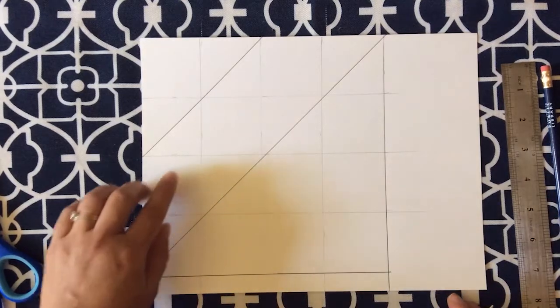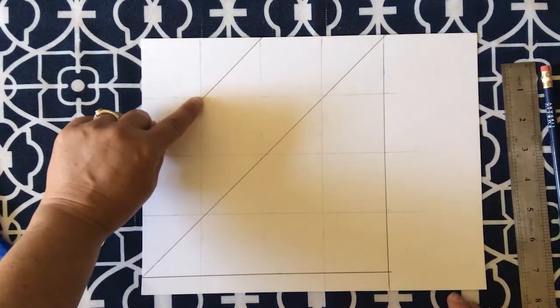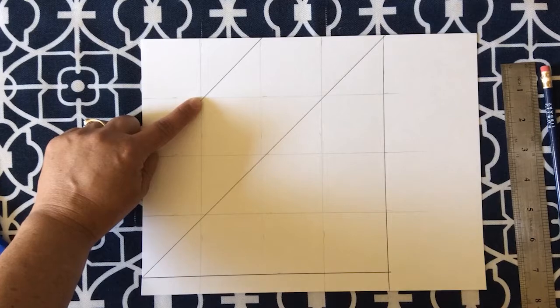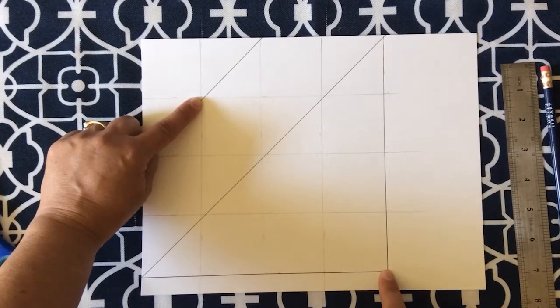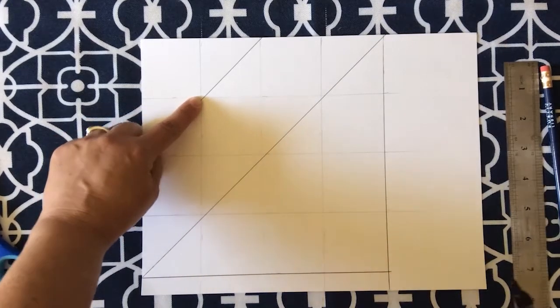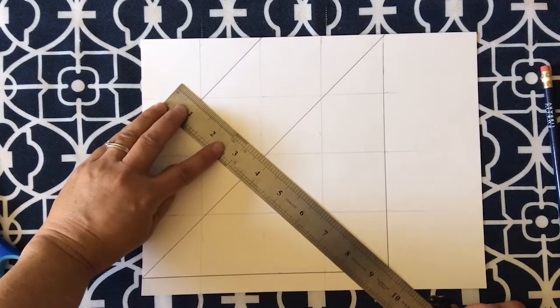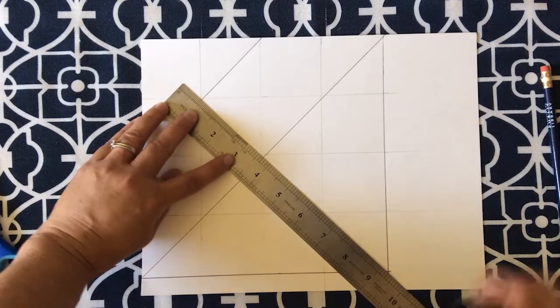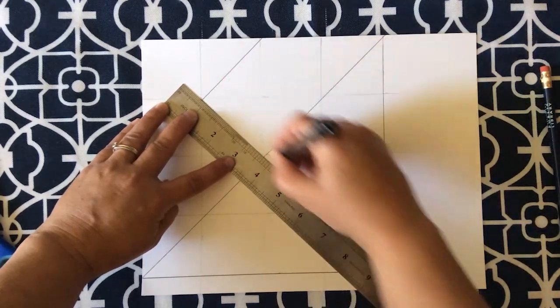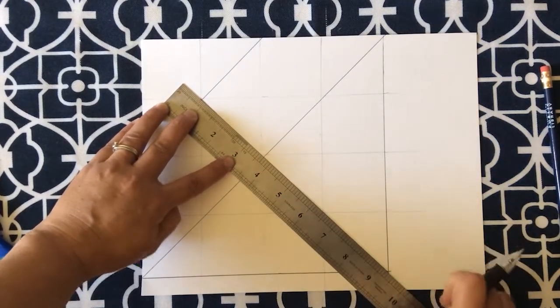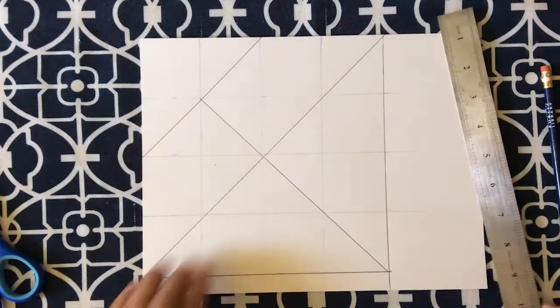Our third line will go from this corner of this square all the way down to the corner of our box. So from here down to the corner of the box. There we go. That's line number three.